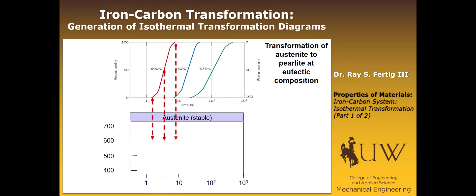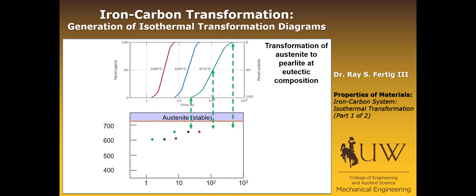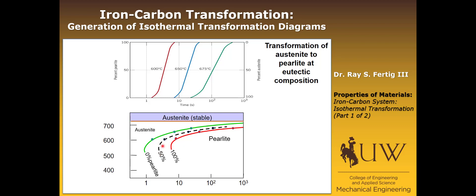Projecting down to 600 degrees C, we plot those points — colored green, black, and red — to indicate when the reaction began at 0%, when it hit 50%, and when it reached 100% or completion. We do that for each temperature: 650 degrees C, then 675 degrees C. Then we connect them with a line, which gives us the transformation rate diagram showing the nose that forms.